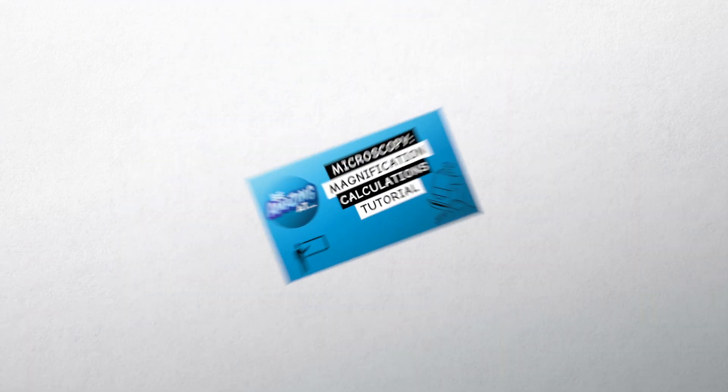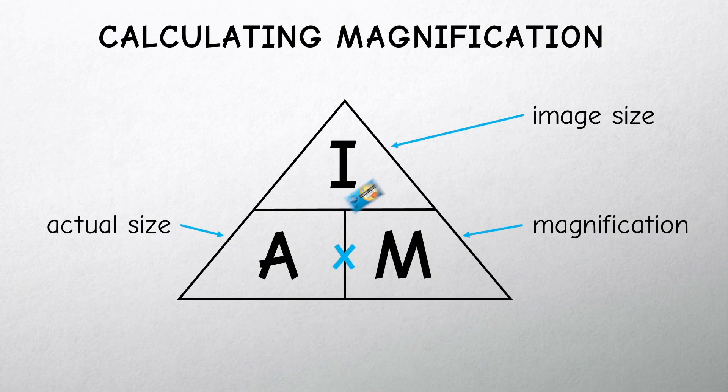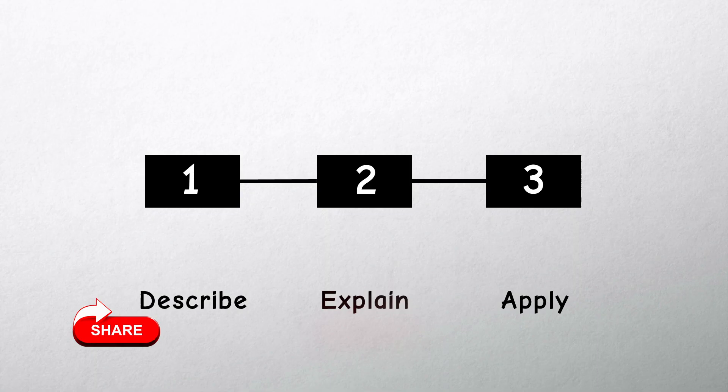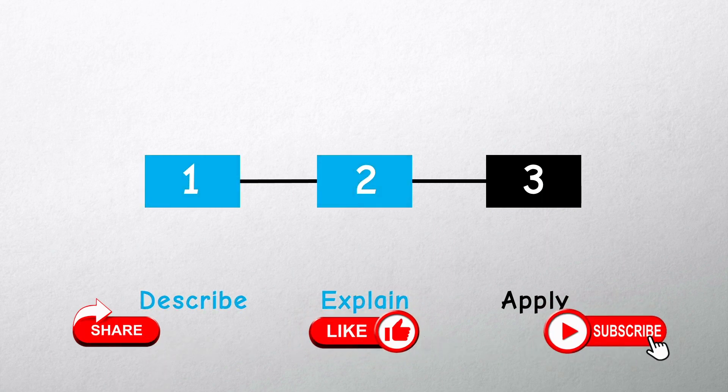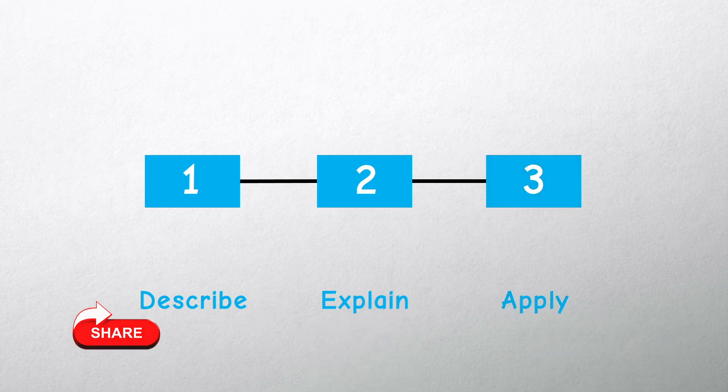In the last video we looked at microscopes and calculating magnification. In this free science lesson we'll look at describing the structure of an animal cell, explaining the function of the cell parts and applying the ideas.